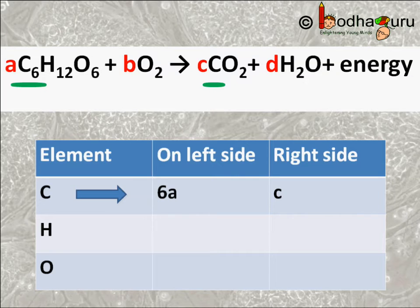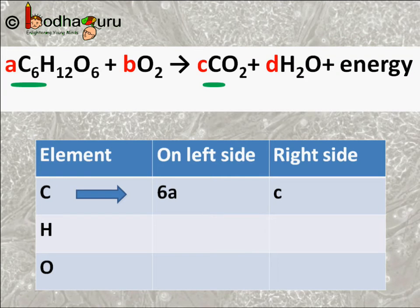We already know when the equation is balanced, the number of atoms are same on both sides of the equation. So here, if we see, the left hand side has 6A number of carbon atoms and this is equal to C carbon atoms on the right hand side.